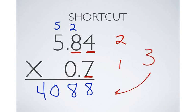So, my answer has to have three decimal places starting from the right. This would be 1, this would be 2, this would be 3. So, the decimal point goes right there, 4.088 is the answer to the problem.